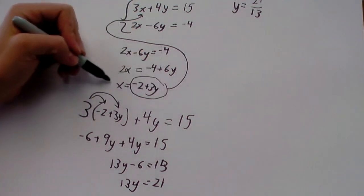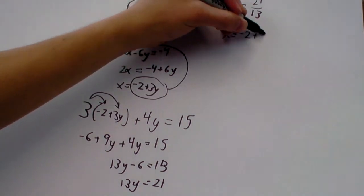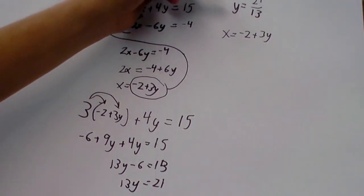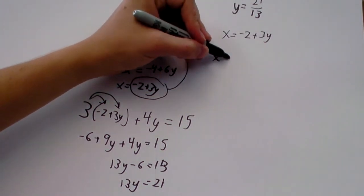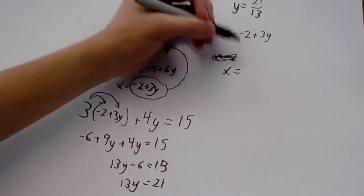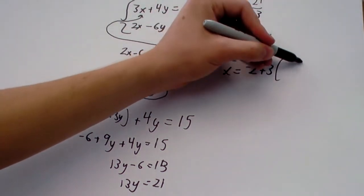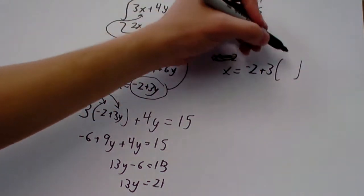And now, we can just go ahead and substitute that into this equation right here. We know that x is negative 2 plus 3y. So, if y is 21 over 13, x is going to be negative 2. Sorry. x equals negative 2 plus 3 times what y is, which is 21 over 13.